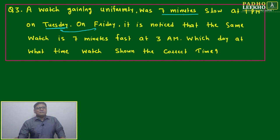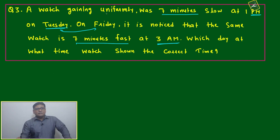If Tuesday 1 PM it was 7 minutes slow, then on Friday it is noticed that the same watch is 7 minutes fast at 3 AM. I kept all the variable factors which can make you confused: AM, PM, different day. It is gaining uniformly but 7 minutes slow, 7 minutes fast.